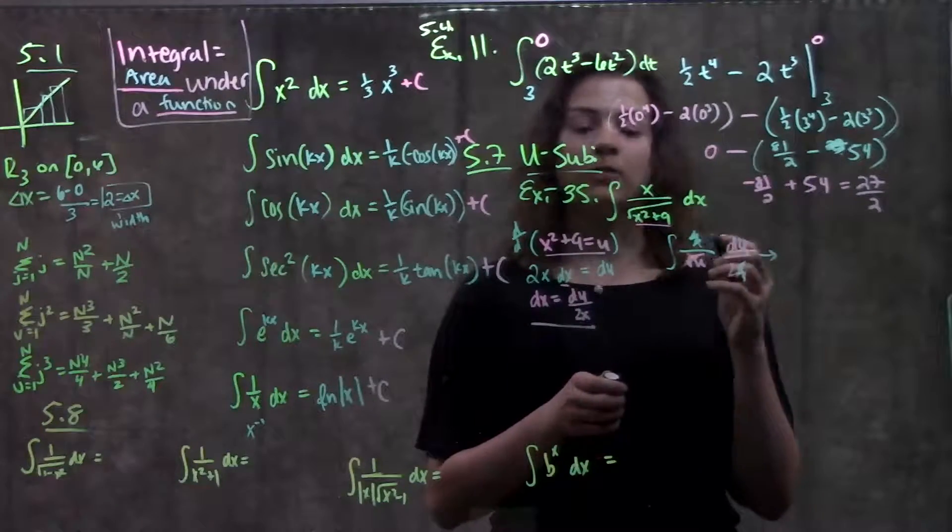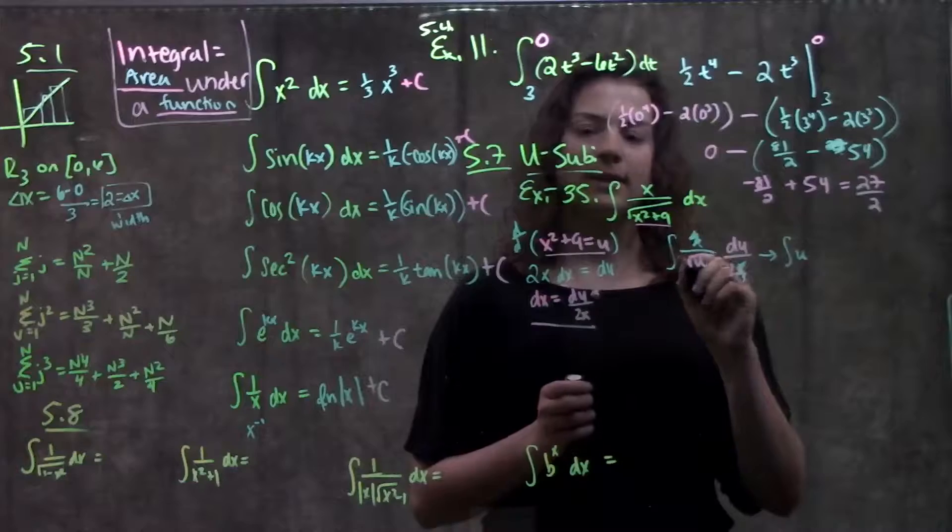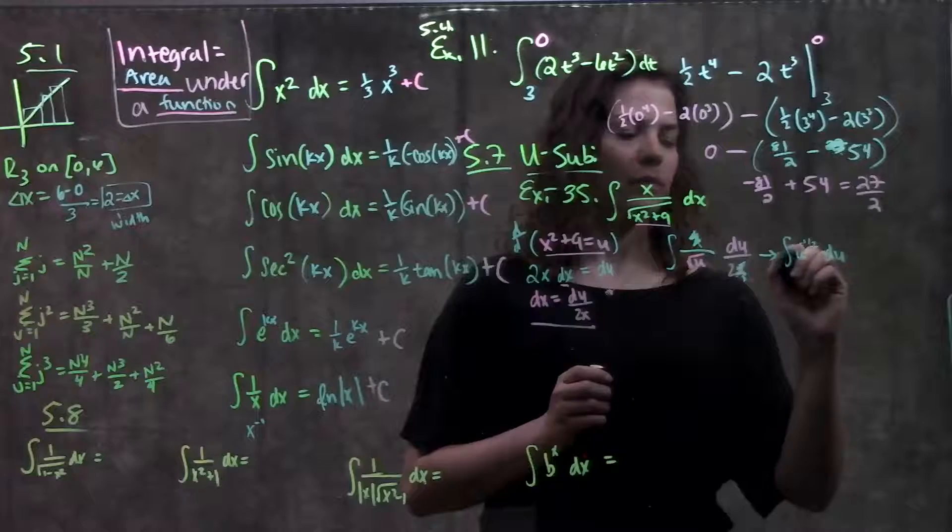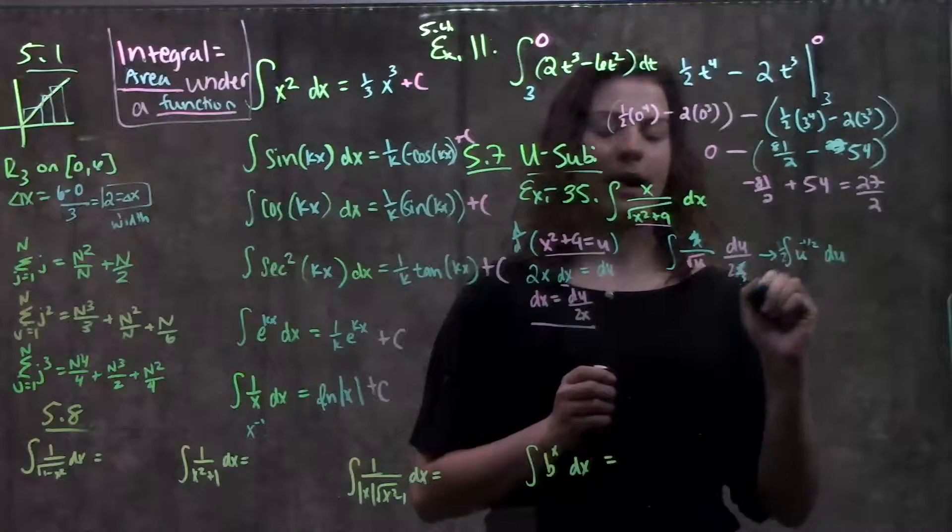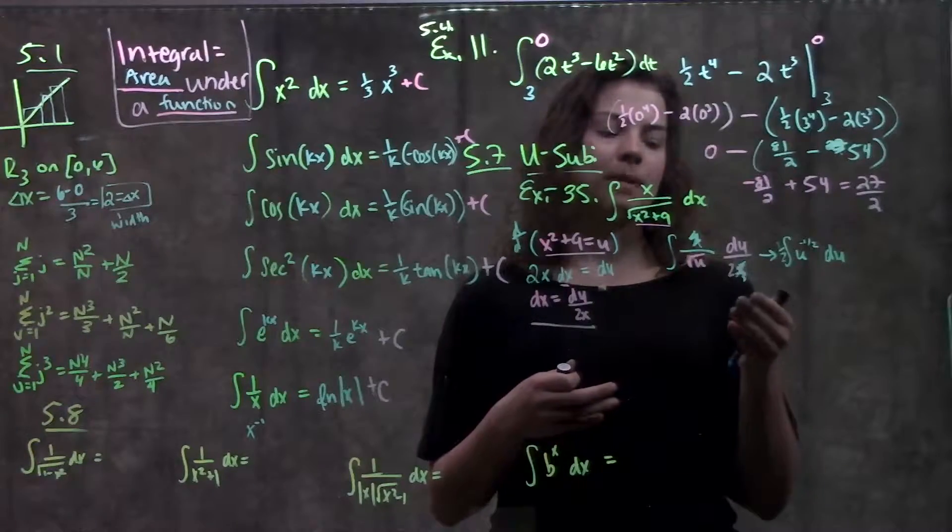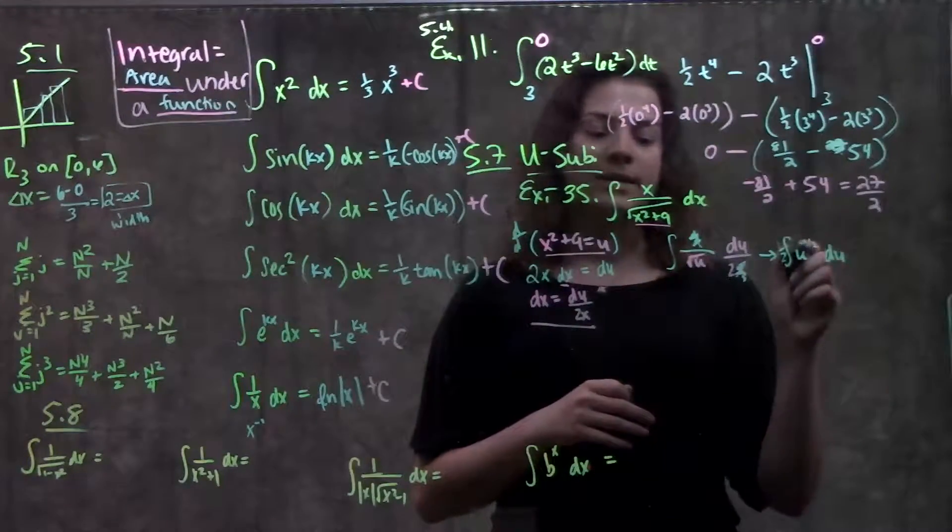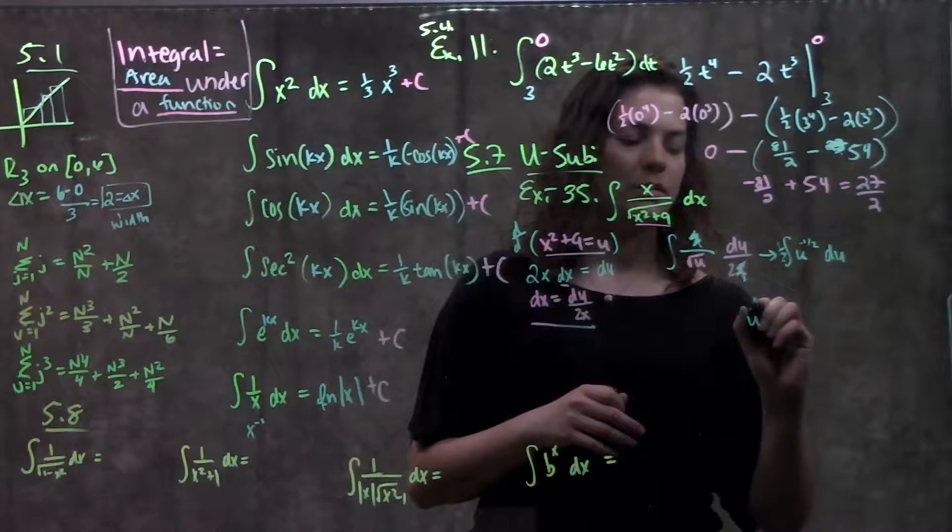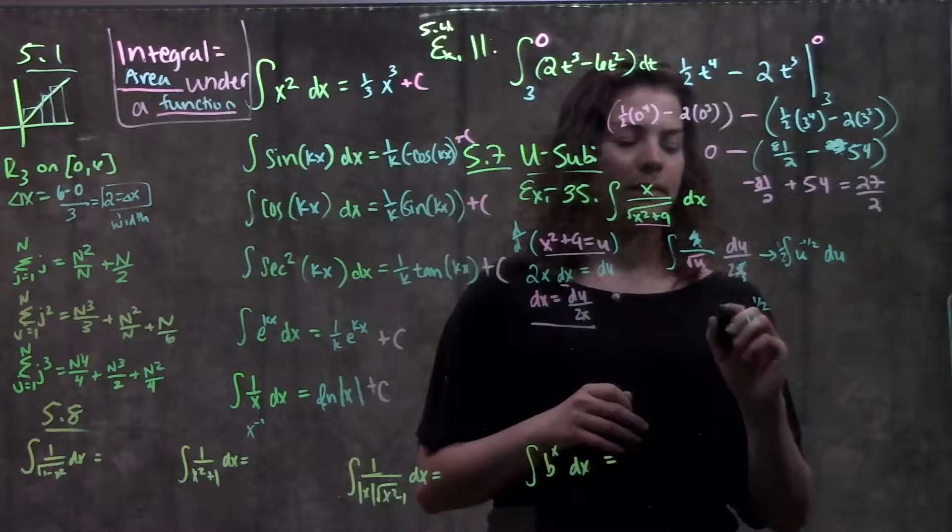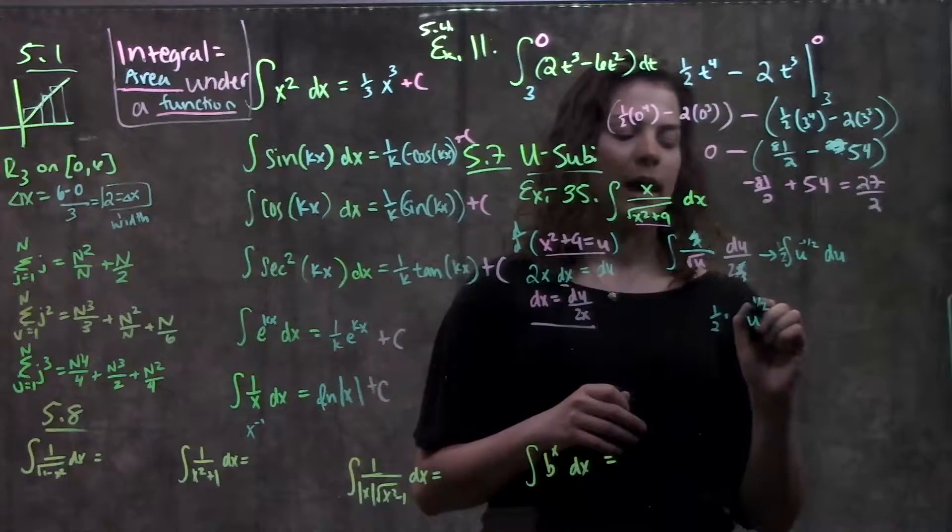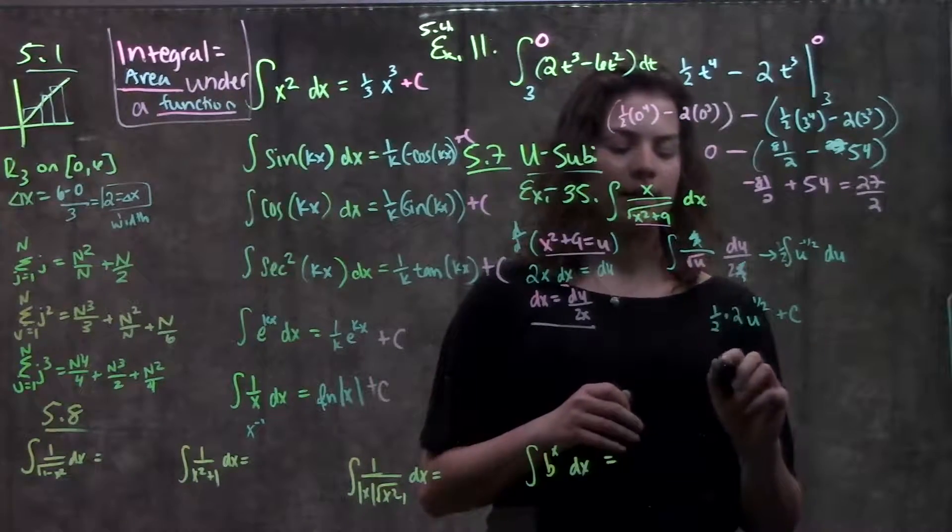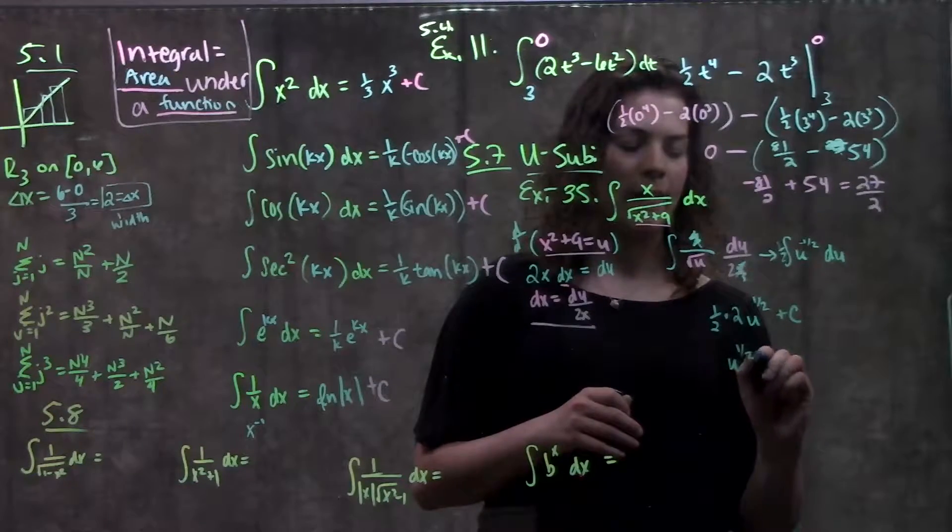What I have here, this works. I have the integral of, I'll rewrite this as a negative exponent, u to the negative 1 half du, and I have this 1 half out here in the front, and this is something that I know how to take the integral of. Using my basic integral rules that I just went over, I'll add 1 to the exponent, and this becomes u to the 1 half, and I'll flip this number over, bring it to the front. Remember I still have this 1 half out here, times, when I flip this over, I get 2, plus c. Simplifying this, this is just u to the 1 half, plus c.